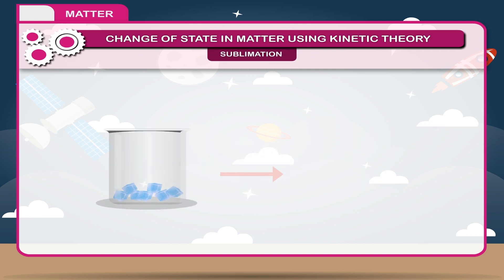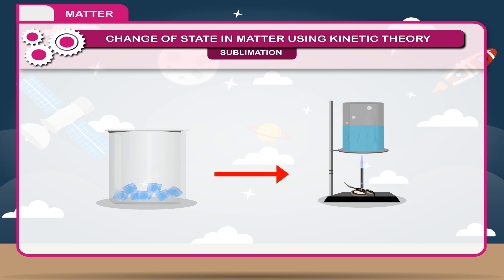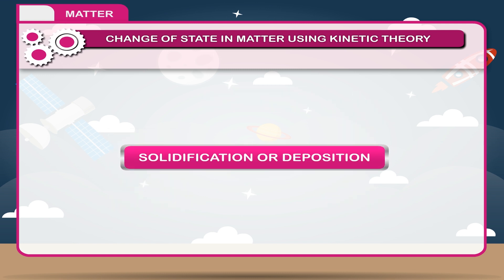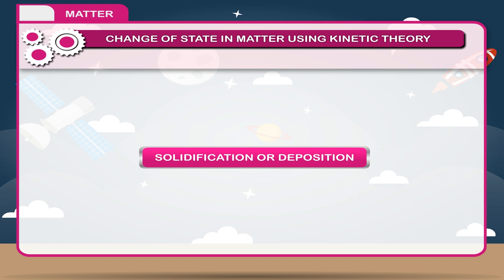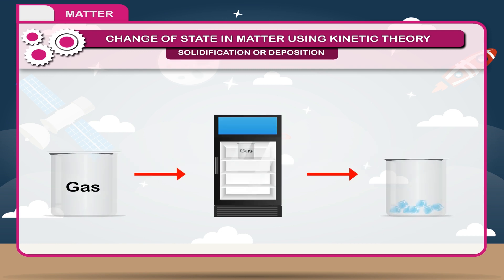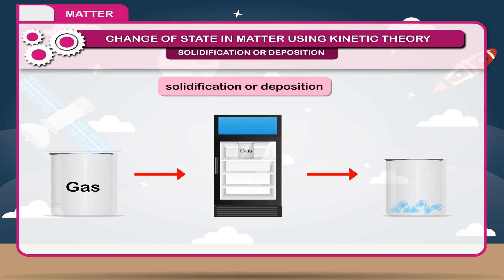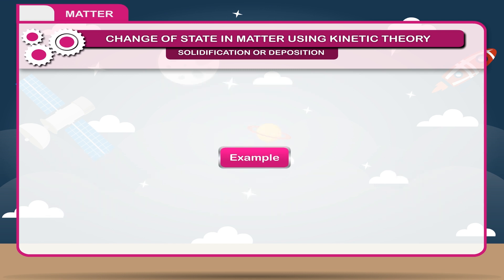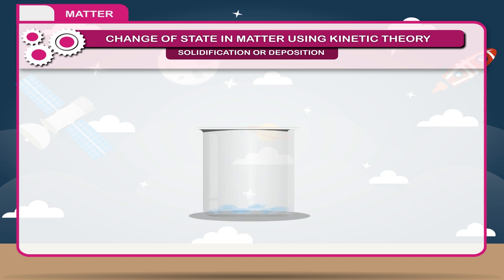The change from gas to solid is called solidification or deposition. For example, in sub-freezing air, water vapor changes directly to ice without first becoming a liquid.